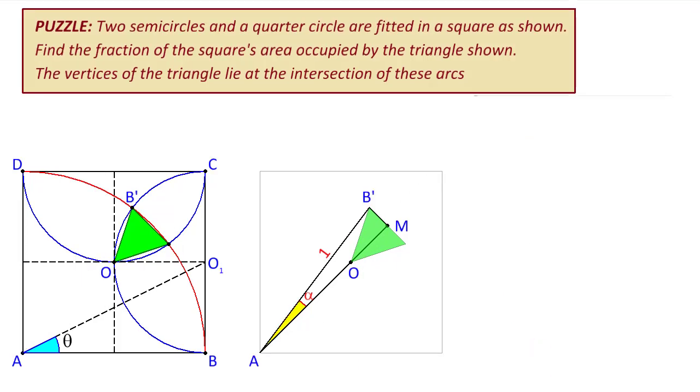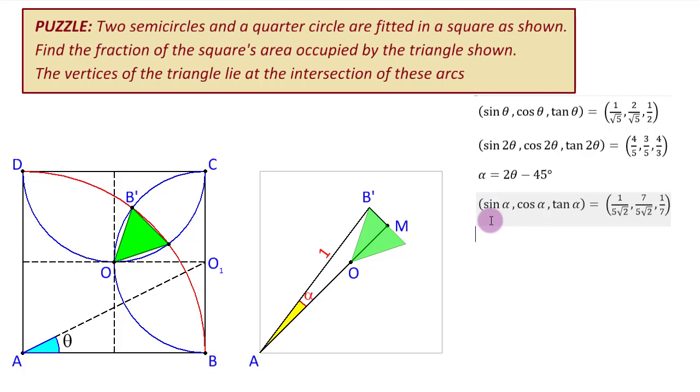Here we are shooting for the angle alpha which is 2 theta minus 45. So, we will start by writing the trigonometric ratios of theta first which is a 1 is to 2 is to square root 5 triangle. So, we can quickly write these ratios. Then we write the ratios for 2 theta and this is even simpler because the moment we have 2 theta is going to be a 3 4 5 triangle from 1 to square root 5 if you go to double it is 3 4 5. So, here are the ratios of 2 theta. Then let us think of alpha itself which is 2 theta minus 45 degrees and here are the ratios of alpha.